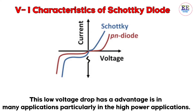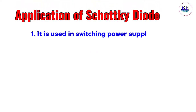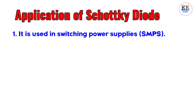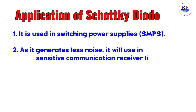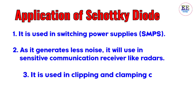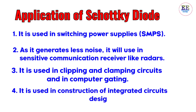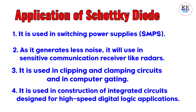Now let's discuss the applications of the Schottky diode. Number one: it is used in switching power supplies like SMPS. Number two: it generates less noise, so it is used in sensitive communication receivers like radars. Number three: it is used in clipping and clamping circuits and in computer gating. Number four: it is used in the construction of integrated circuits designed for high-speed digital logic applications.